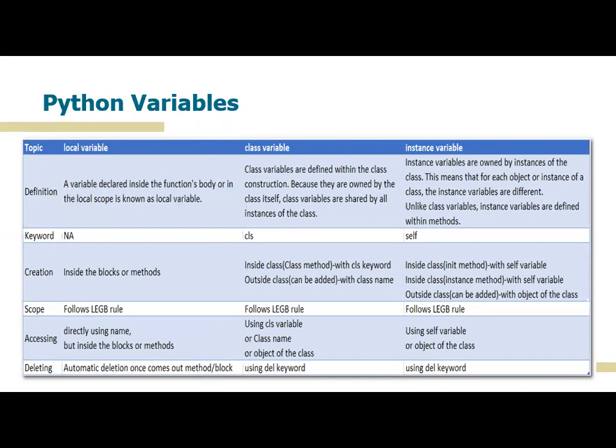Related keywords: for local variables we don't have any specific keyword, but in functional programming we may have the non-local keyword. In OOP concepts we don't consider any keyword. For class variables we use the variable name 'cls', and for instance variables we use 'self'. It's a naming convention — it's not mandatory to use the same keyword.